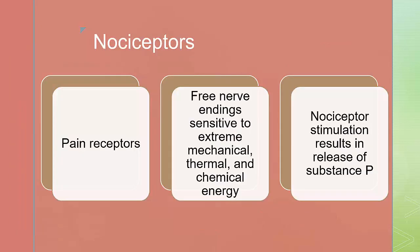Nociceptors are pain receptors — free nerve endings sensitive to extreme mechanical, thermal, and chemical energy. They are located in the meninges, periosteum, skin, teeth, and even some organs. Pain information is transmitted to the spinal cord via myelinated C fibers and A-delta fibers. Nociceptor stimulation results in the release of substance P.